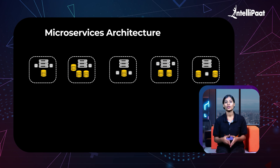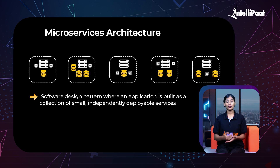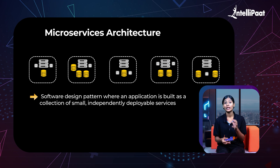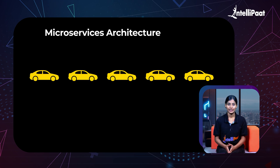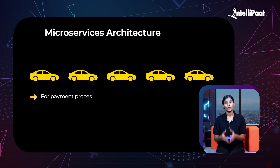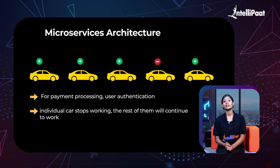Microservices architecture, on the other hand, is like a bunch of cars where each individual car can work as a separate unit — meaning even if one car breaks down, the others keep on working. In technical terms, microservices architecture is a software design pattern where an application is built as a collection of small, independently deployable services, such as payment processing, user authentication, etc. Hence, even if one individual service stops working, the rest of them will continue to work.